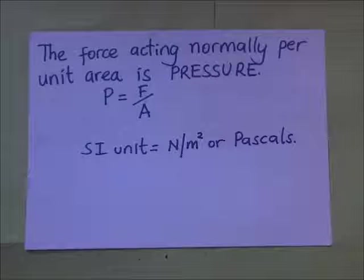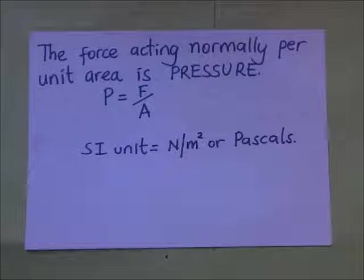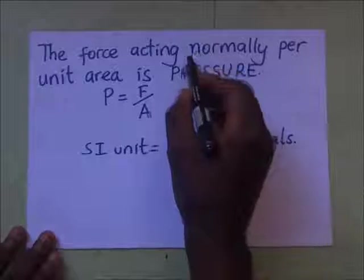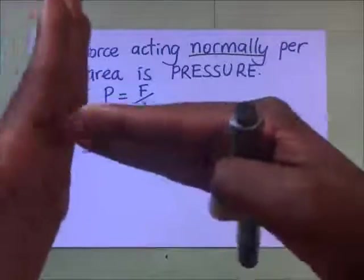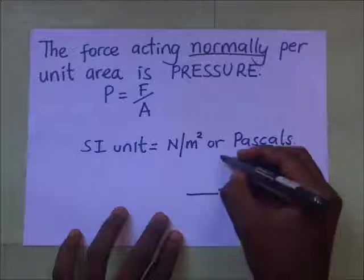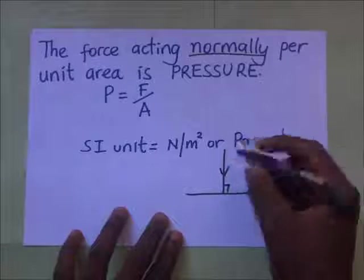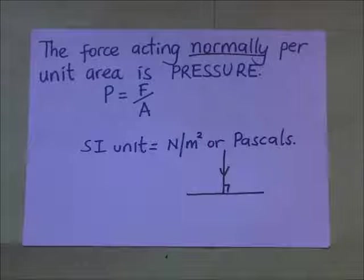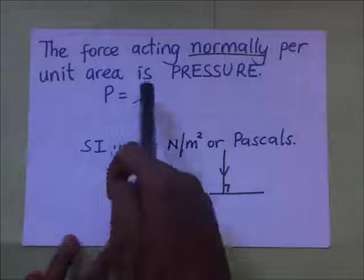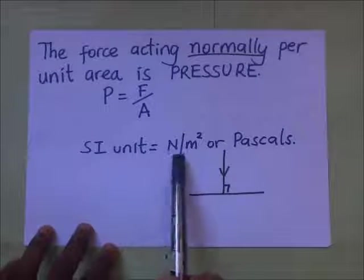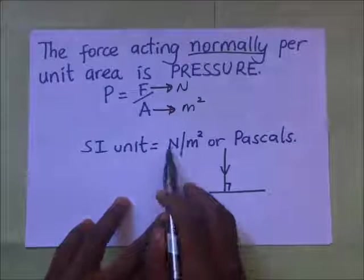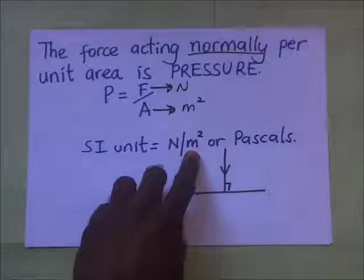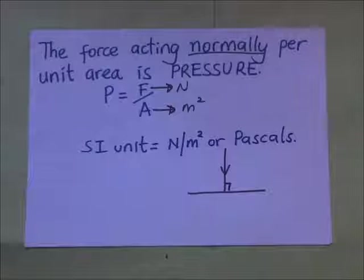What is pressure? Pressure is simply that force that is acting normally per unit area. When I talk about a force acting normally, I mean a force that is acting perpendicularly — the force is supposed to be normal to the surface, meeting at 90 degrees. So the force acting normally per unit area is what we call pressure. The formula for pressure is: pressure equals force over area. The standard SI unit for pressure is Newtons per meter squared, and one Newton per meter squared is given as Pascals.